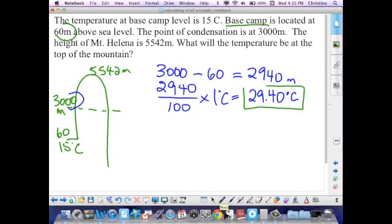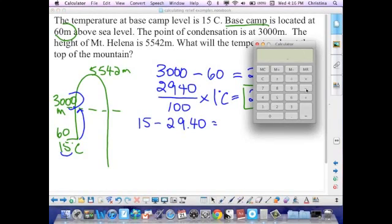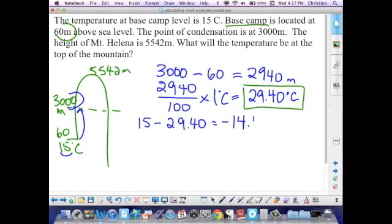Now we're going to determine what the temperature is at this point of condensation. We've determined the drop from our starting point to our point of condensation, but what is the temperature at this point? We're going to take our starting temperature of 15 degrees Celsius and subtract from it 29.40. So 15 minus 29.40 gives me an answer of negative 14.4 degrees Celsius.